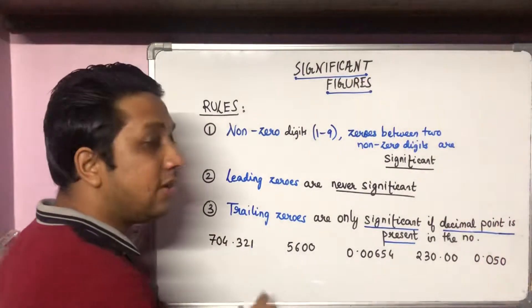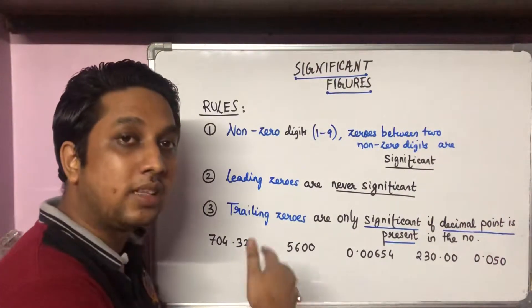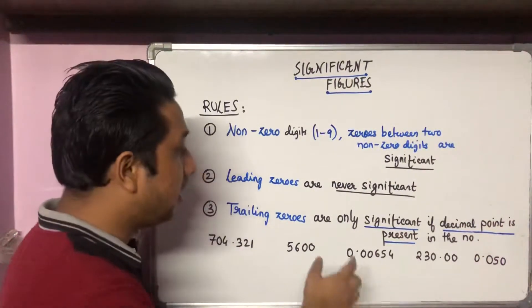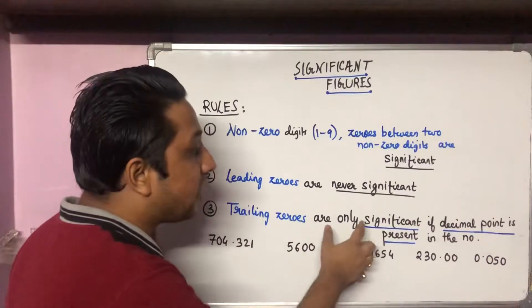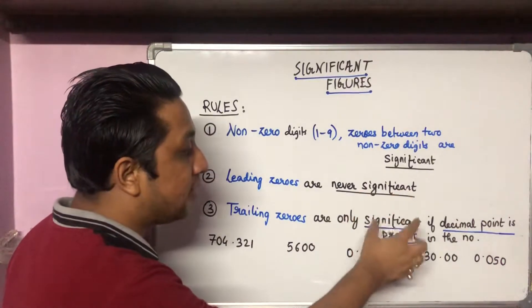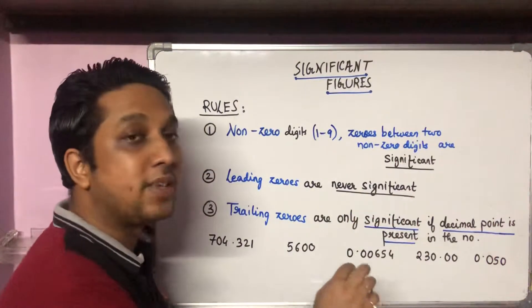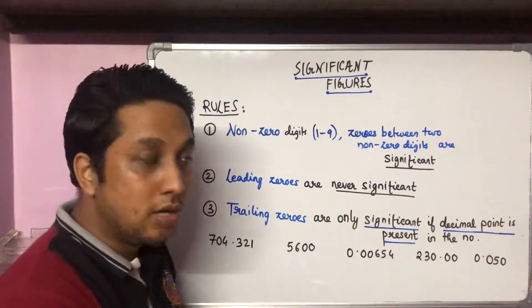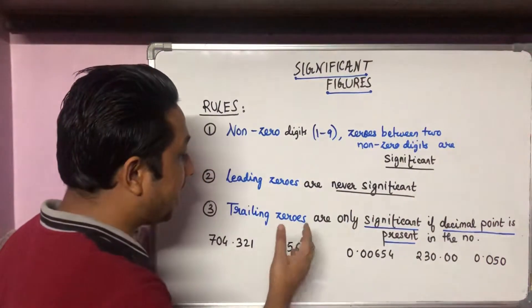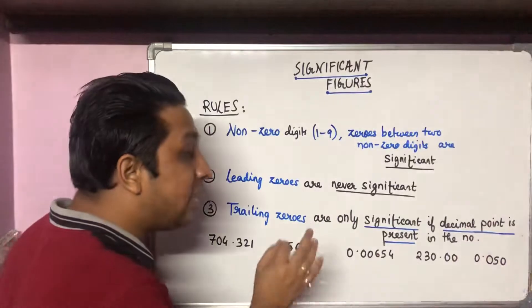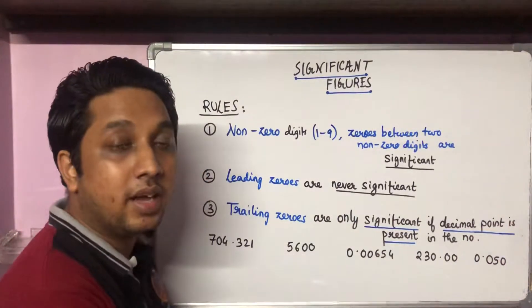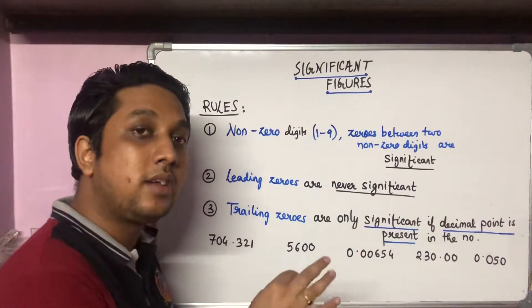Number three: trailing zeros — that means the zeros at the last of the number — are only significant if a decimal point is present in the number. Trailing zeros are significant only when a decimal point is present.